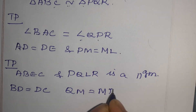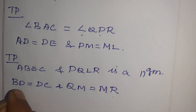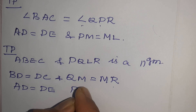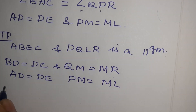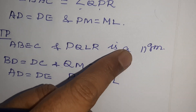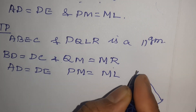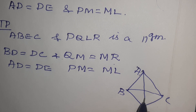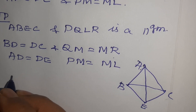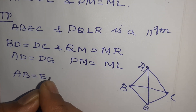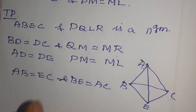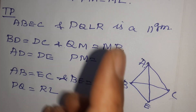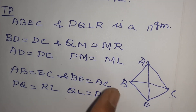Since AD is the median, BD equal to DC, and since PM is the median, QM equal to MR. By construction AD equal to DE and PM equal to ML. Therefore the diagonals bisect each other. Therefore ABEC and PQLR are parallelograms. Since opposite sides of a parallelogram are equal: AB equal to EC, BE equal to AC, PQ equal to RL, and QL equal to PR.